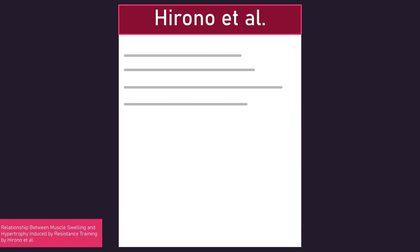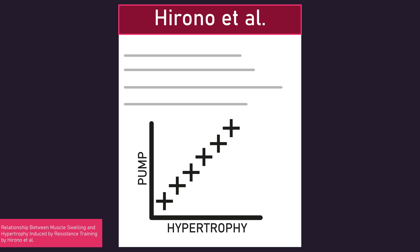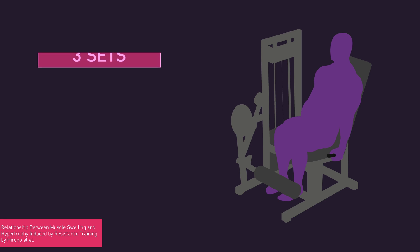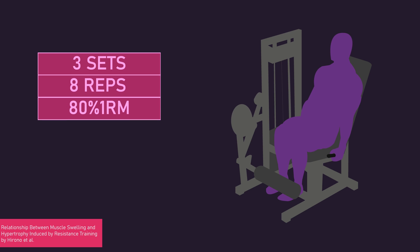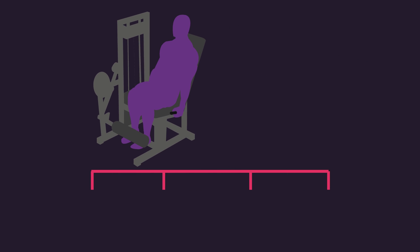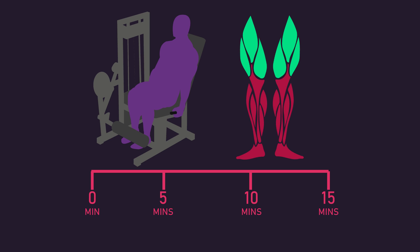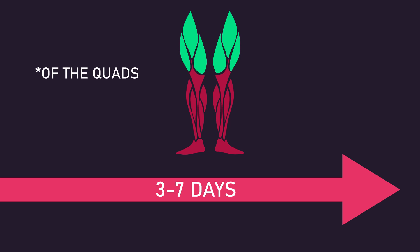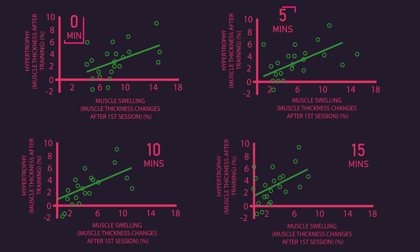Finally, one study by Hirono and colleagues actually found a correlation between the pump and hypertrophy. Subjects trained leg extensions with 3 sets of 8 repetitions with an 80% 1 rep max load, using 60 seconds of rest between sets, 3 times per week for 6 weeks. During the first session, immediately, 5 minutes, 10 minutes, and 15 minutes after it, quadriceps thickness was measured. This was considered a measure of muscle swelling. 3-7 days after the final training session on the 6th week, muscle thickness was also measured, but this measure was considered an indicator of hypertrophy. Ultimately, the researchers found correlations between the magnitude of muscle swelling measured at all time points after the first training session and the amount of hypertrophy experienced by the end of the study.